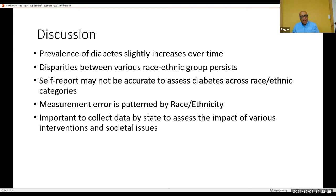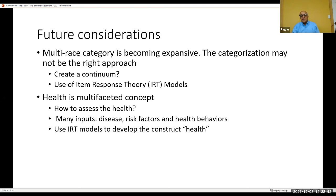For future directions: the prevalence of multi-race categories has been steadily increasing, and more people are opting to choose multi-race. So the current categorization approach may not be right. Should we think about a continuum of race/ethnicity composition in society? One idea is to use item response theory models to construct a continuous construct of what race/ethnicity really means. I've begun exploration using the American Community Survey data, which collects expansive race options, though much of the linked health data is not publicly available and requires access to secure Research Data Centers.